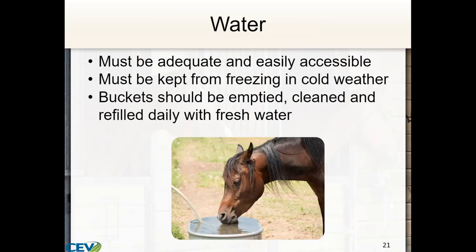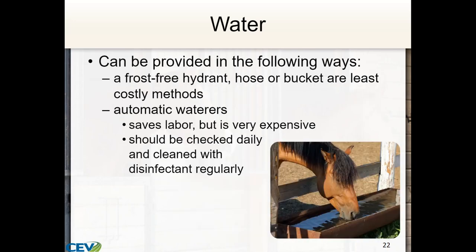Water must be kept adequate and easily accessible. You must keep it from freezing in cold weather, and buckets should be emptied, cleaned, and refilled daily with fresh water. Buckets are not the most efficient because you have to clean them so often. Water can be provided via a frost-free hydrant, a hose, or a bucket — the least costly methods. Automatic waterers are very nice and save labor but are expensive, and you need to check them daily and clean them with disinfectant regularly.